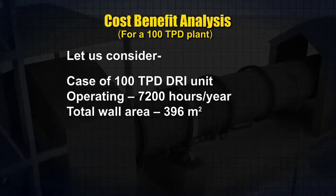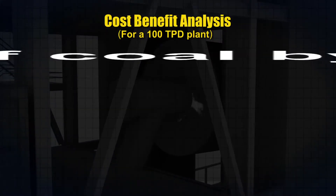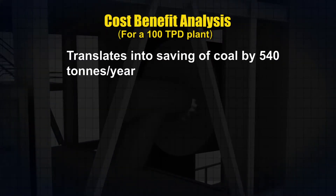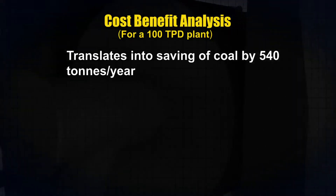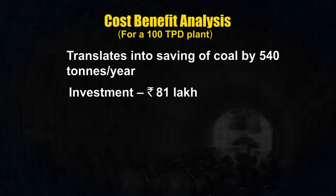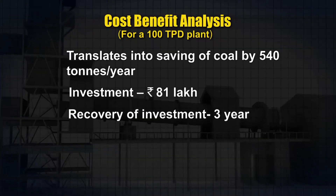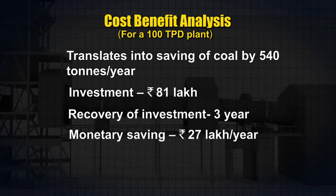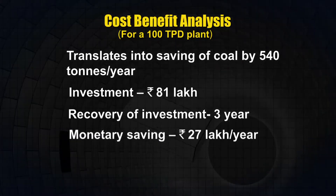The total wall area is 396 square meters. The replacement of conventional refractory with mullite based refractory can lead to a saving of 540 tons of coal per year. Thus, an investment of 81 lakh rupees can be recouped within a period of 3 years, with a monetary saving of 27 lakh rupees per year.